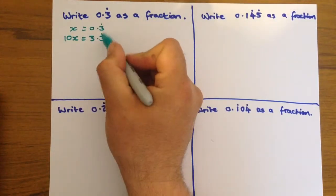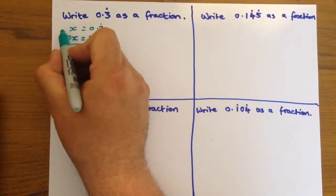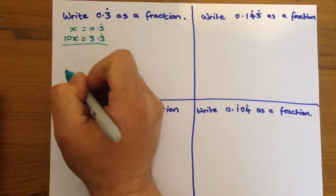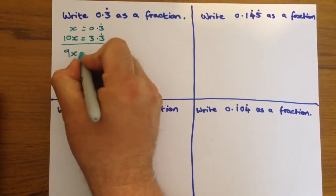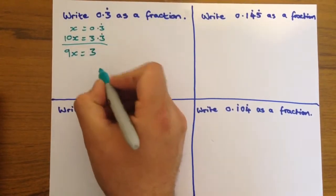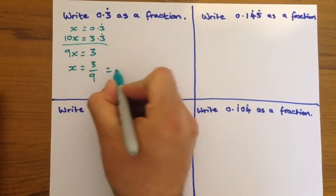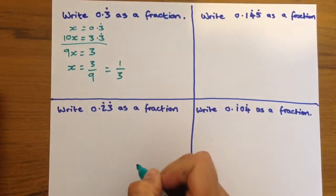Now we've got two expressions ending in 0.3 recurring, so we're going to subtract x from 10x, which gives us 9x, and 3.3 recurring take away 0.3 recurring leaves us with 3. Divide through by 9 and then cancel down, you get one third.